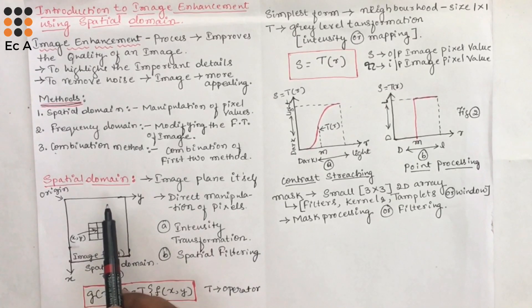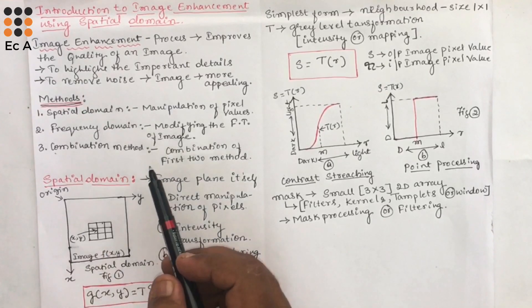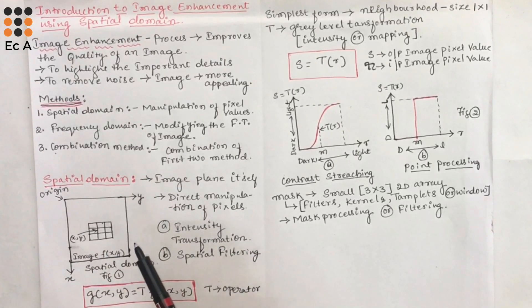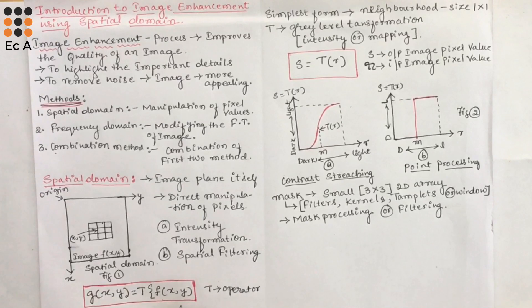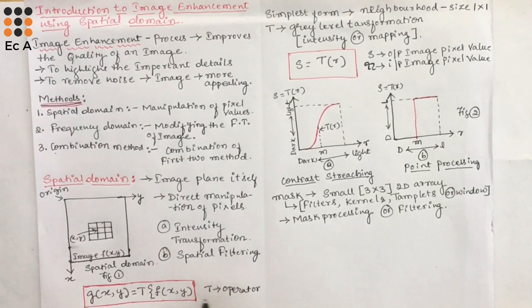The spatial domain technique operates directly on the pixels of an image, but in the frequency domain, operations are performed on the Fourier transform of an image. This is the difference between spatial domain and frequency domain. The spatial domain process is denoted as g(x,y) = T[f(x,y)], where f(x,y) is the input image, g(x,y) is the output image, and T is known as the operator. This operator can be applied to a single image or to a set of images.